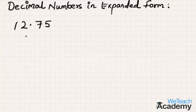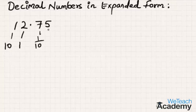Coming over to the whole number part first: 2 is in units place, that is ones place, and 1 is in tens place. Coming over to the decimal part: 7 is in the tenths place, that is 1 by 10, and 5 is in the hundredths place, that is 1 by 100.